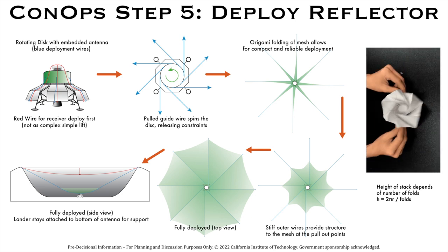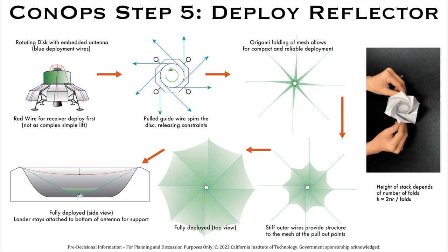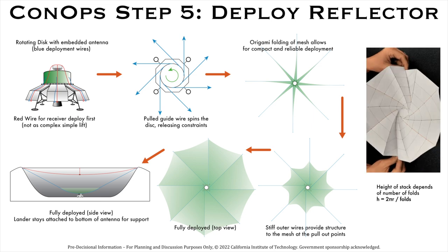The next step is to deploy the reflector mesh using an origami based approach. Imagine a rotating disk with an embedded mesh at the top of the lander. As we pull along the lift wires, this disk spins and releases constraints and the mesh unfolds and expands to its full diameter of 350 meters.